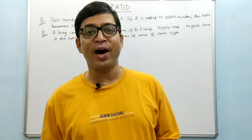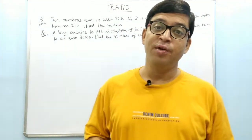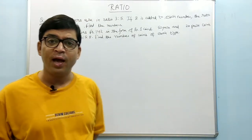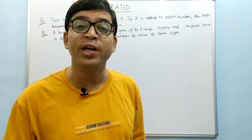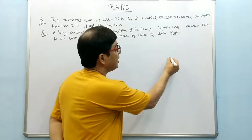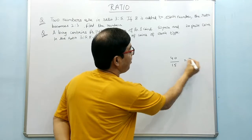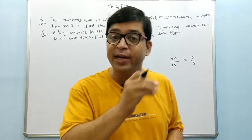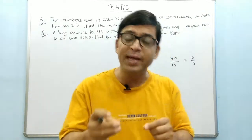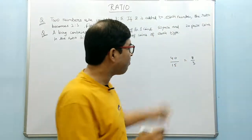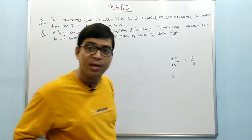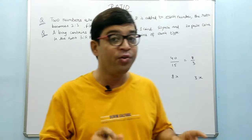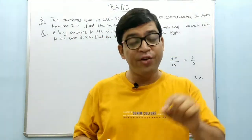Good morning friends, we will now start ratio and proportion. Firstly, we will see the meaning of ratio. Suppose my age is 40 years and one of my students is 15 years. The ratio of our ages will be 40 divided by 30, coming out to be 8 divided by 3, that is 8 is to 3. That doesn't mean my age is 8 years and the age of my student is 3 years — it is the simplest ratio among the two things.